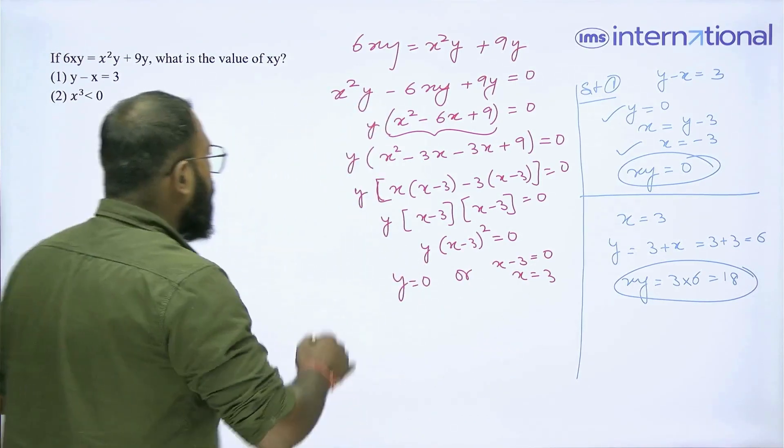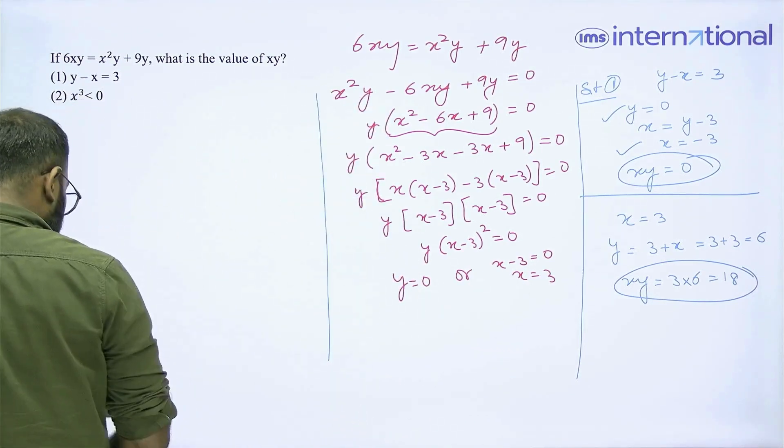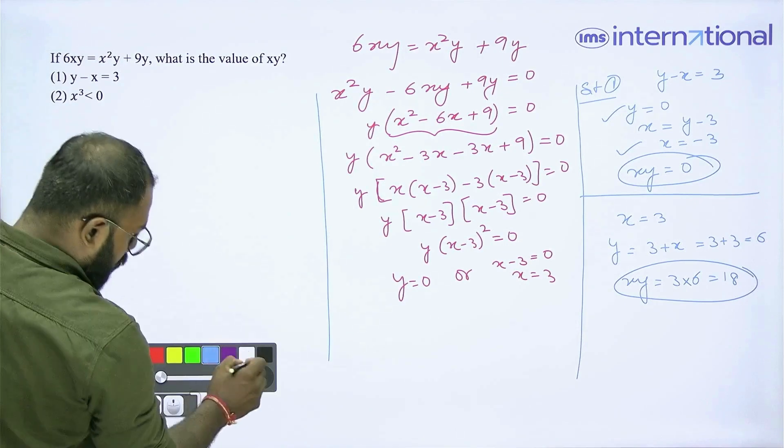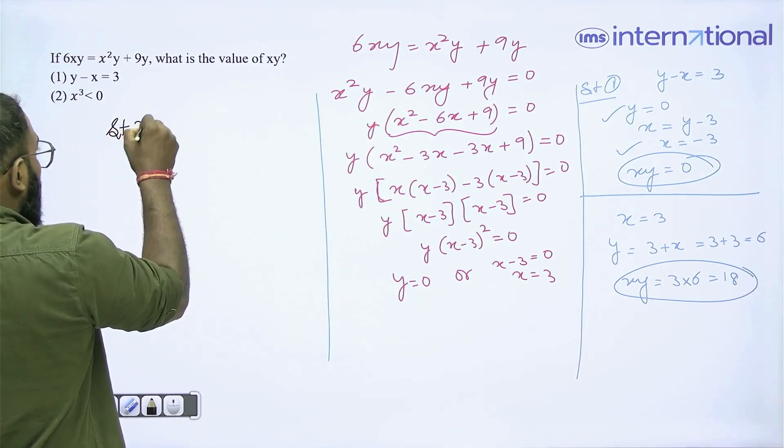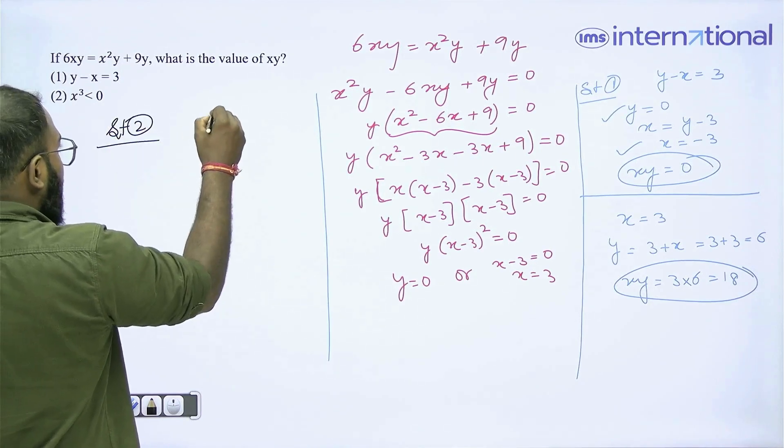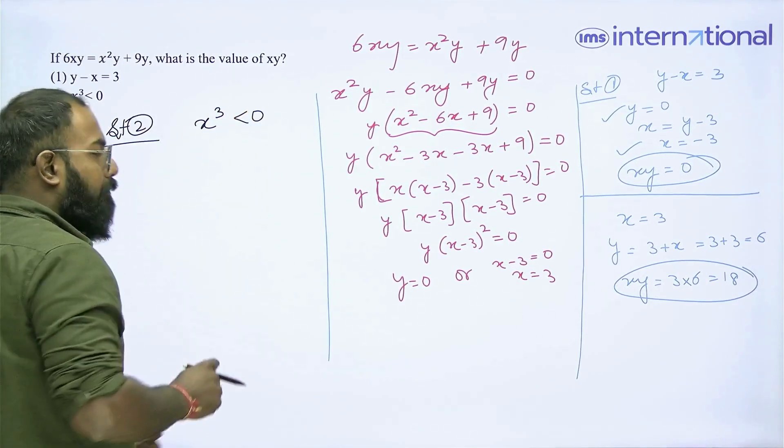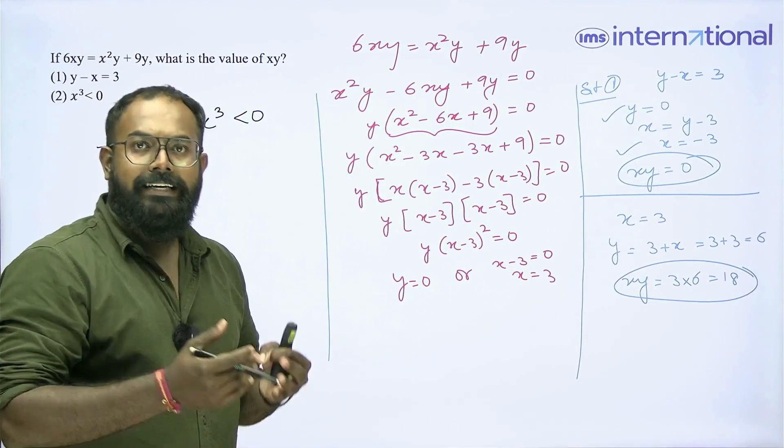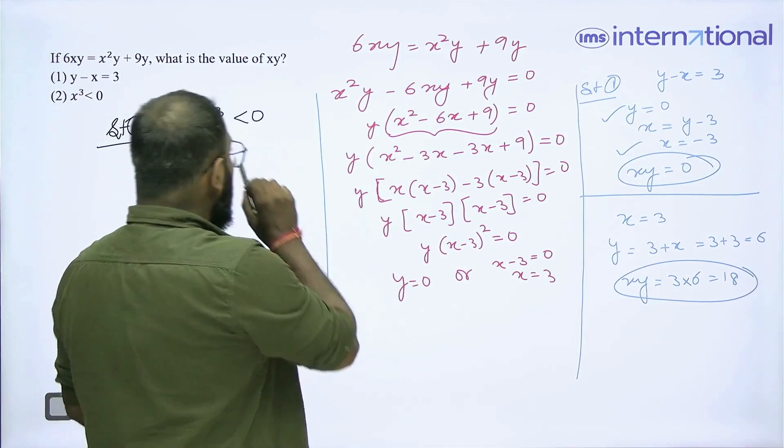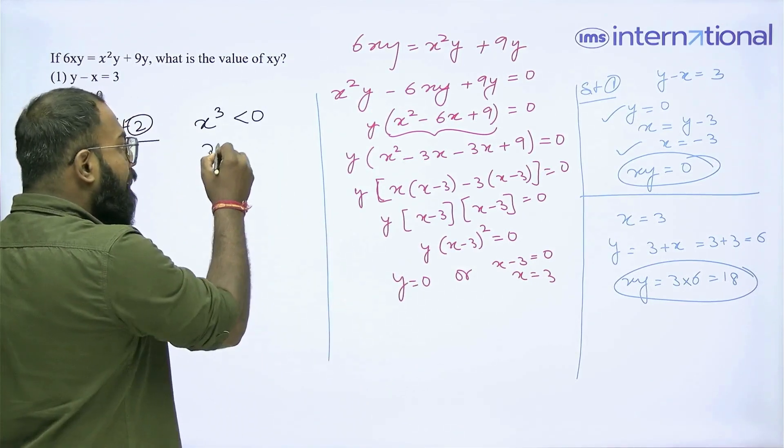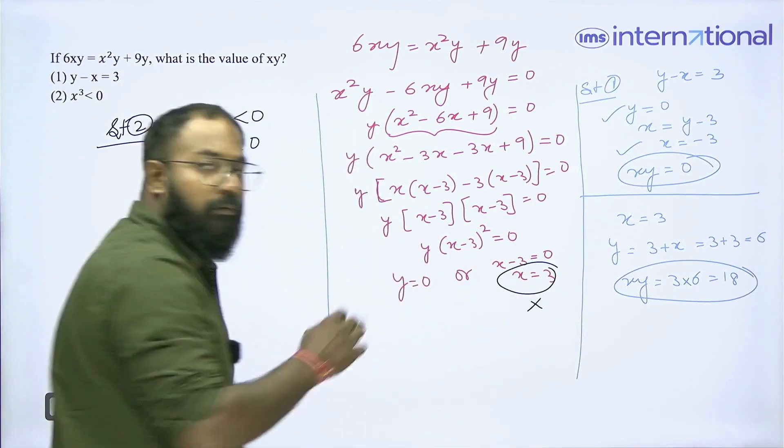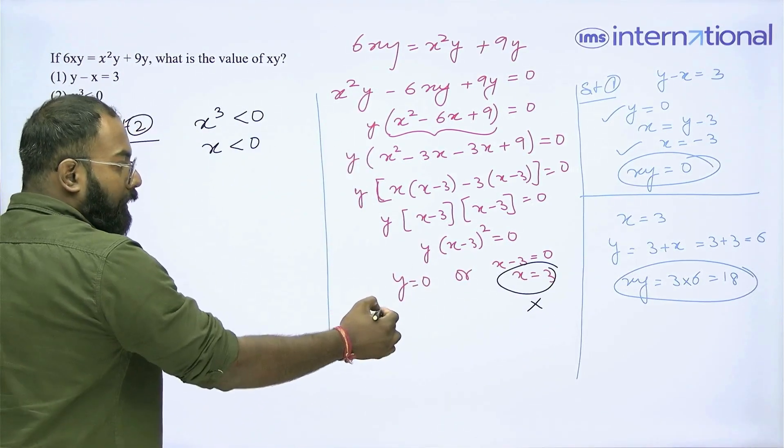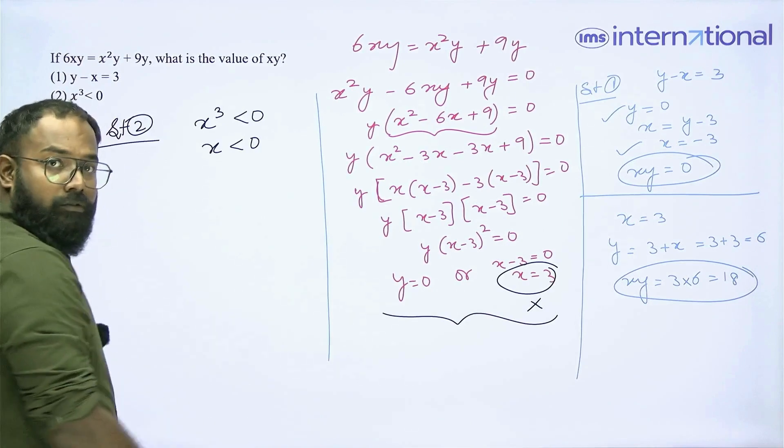Now, let us jump to statement 2. Statement 2 says that x³ < 0, that means x³ is negative. Now, since x³ is negative, x has to be negative, that means x cannot be 3 anymore, clear?